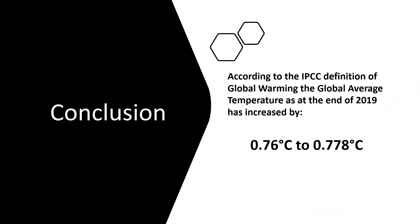The conclusion of our analysis is that the likely range for global warming, as at the end of 2019, is 0.76 degrees Celsius to 0.778 degrees Celsius.